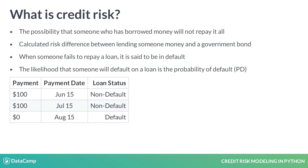Consider this example. We've loaned $300 to someone who has made two payments but not the final payment. It is at this point that we consider the loan to be in default. Predicting this beforehand is useful for us to estimate expected loss.